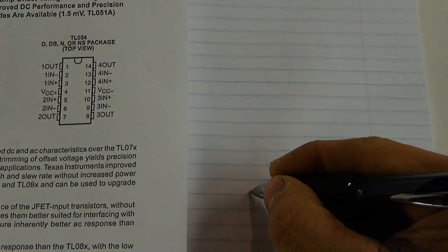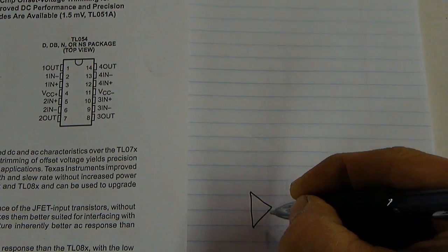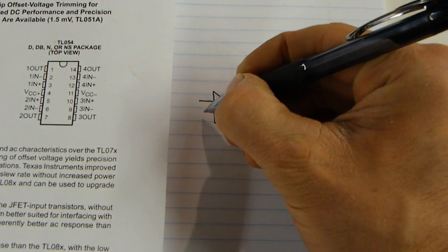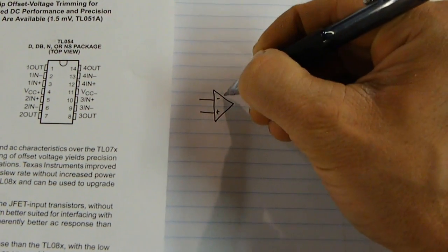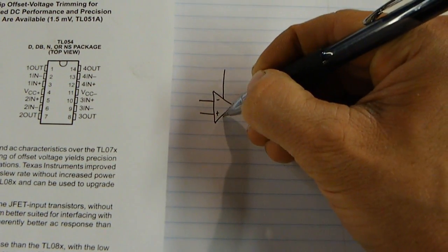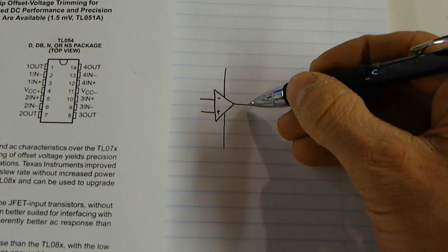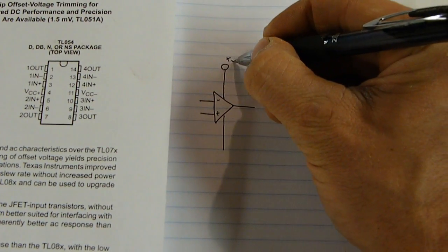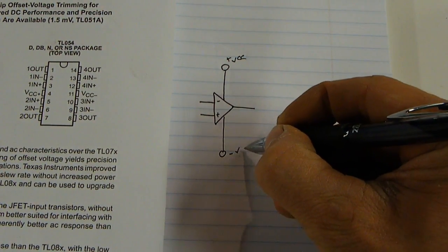You'll notice in this particular chip there's actually four op-amps, and one op-amp, the symbol for that would be a triangle. Normally if you're looking at a schematic, you would see something similar to this, and an output. This one is usually plus VCC, and this is usually minus VCC.